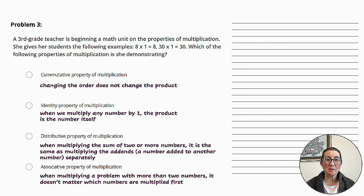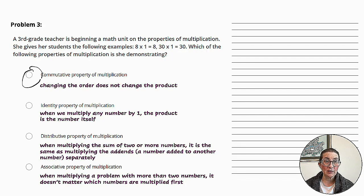A third grade teacher is beginning a math unit on the properties of multiplication. She gives her students the following examples: 8 times 1 equals 8, 30 times 1 equals 30. Which of the following properties of multiplication is she demonstrating? Our first option is the commutative property of multiplication. This is when changing the order of the factors does not change the product. So let's look at the examples. 8 times 1 equals 8, 30 times 1 equals 30. If we change these factors around, the product still remains the same. So this is a possible answer.